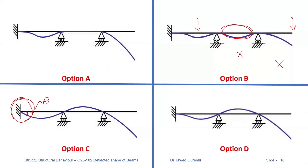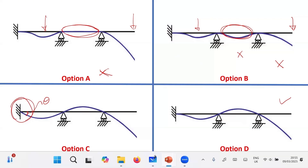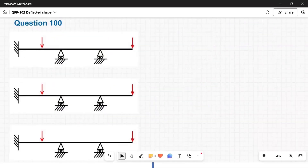Option A is incorrect as well because we have loading here and loading at the end — the right side is correct, but why is this remaining a straight line? There's no reason for that, so this is wrong. By process of elimination, the only option left is option D. I will prove it with the help of a bending moment diagram and direction of reactions, so that everything matches. Let's solve it in detail.